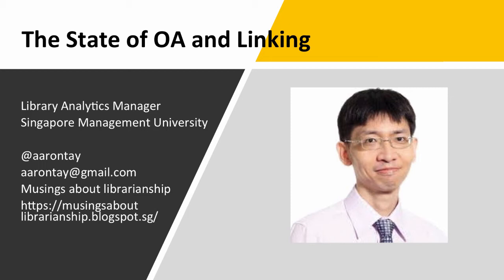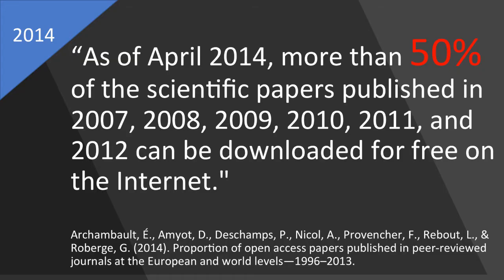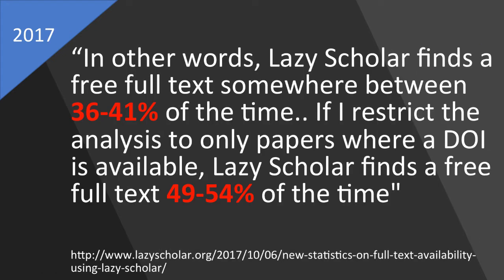My name is Aaron T; I'm from the Singapore Management University, where I'm the library analytics manager. I'm going to argue that we are at a point in history where roughly half of what our users want to access is either open access or at least free to read. In 2014 I came across an early study saying 50% of items people were looking for were free to download. I initially thought this was an overestimate, but as time went by more studies appeared. The Lazy Scholar extension found that for articles with a DOI, roughly half were available for free.